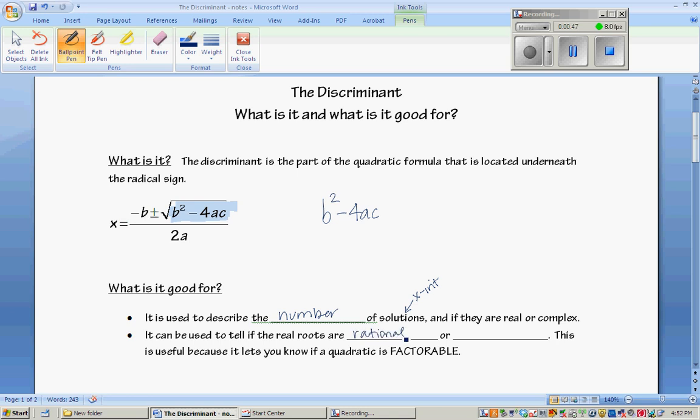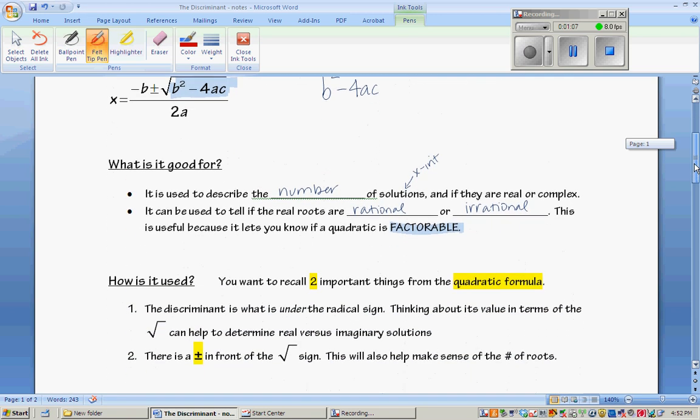For example, the square root of 4 comes out to be 2, or if they're irrational where we would need to get a decimal approximation. This is useful because it lets you know if a quadratic is factorable. If it is a rational square root, then it means we could have factored it instead of using the quadratic formula.